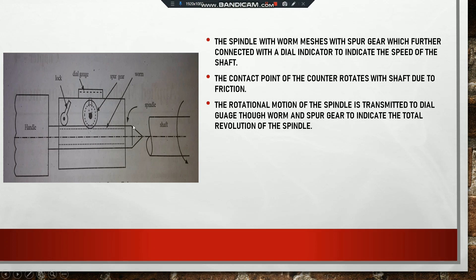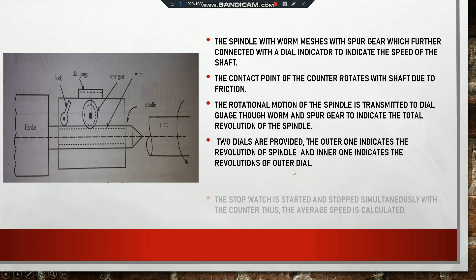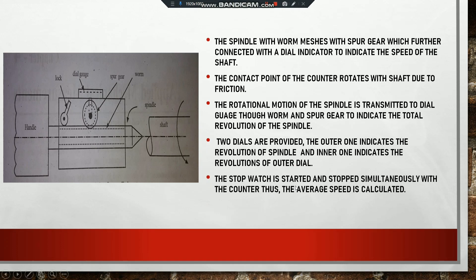To measure the revolutions of the spindle, two dials are provided. The outer one indicates the revolutions of the spindle, and the inner one indicates the revolutions of the outer dial. So behind the main dial gauge there is another dial — one dial indicates the revolution of the spindle and another indicates the revolution of the outer layer.